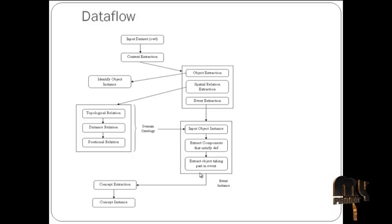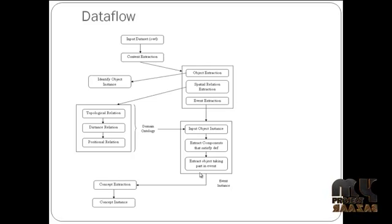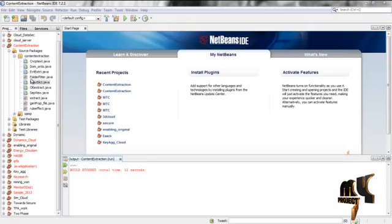For the event extraction, we give an object as an instance, and by means of that instance we are going to extract the components. Then we extract the objects in place of events. By means of this event extraction we have categorized the data into objects, events, and subjects, which in turn is used to generate the query in a very efficient manner. At last we get the input OWL ontology web language and paragraph data, and by means of concept extraction we get the concept instance of each and every object.